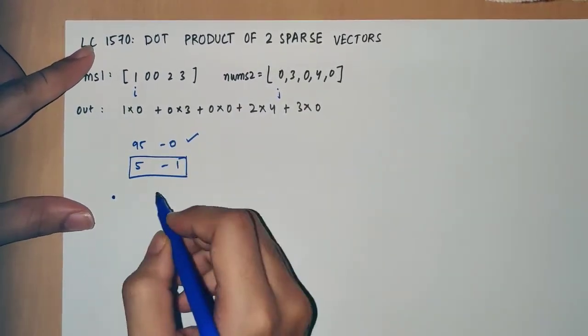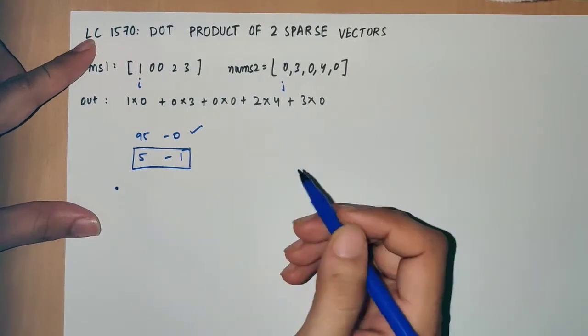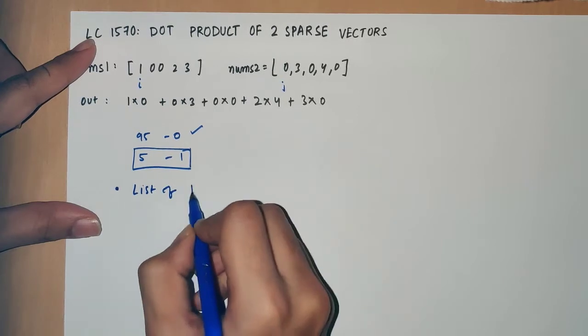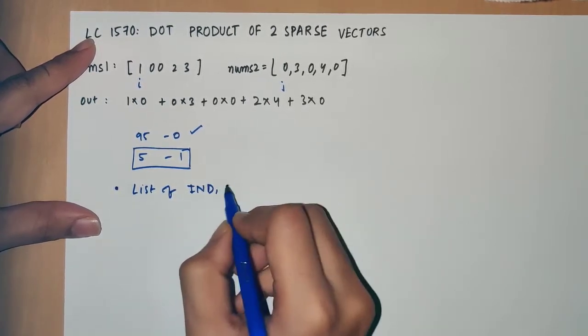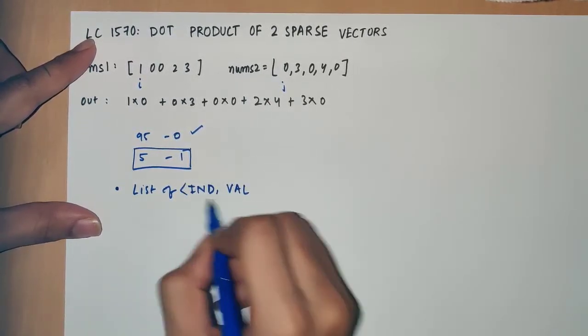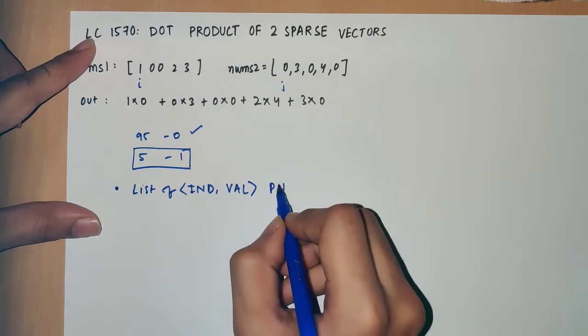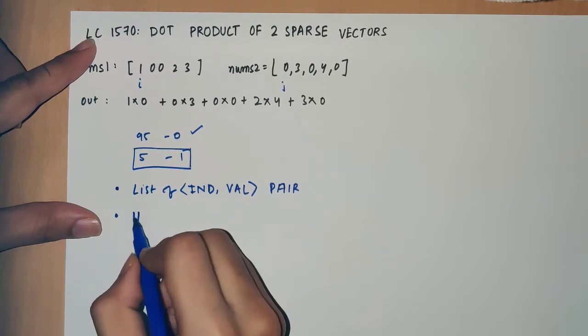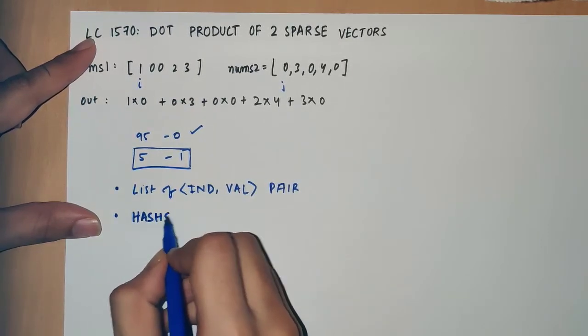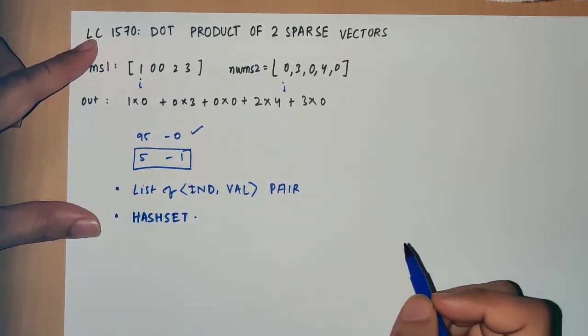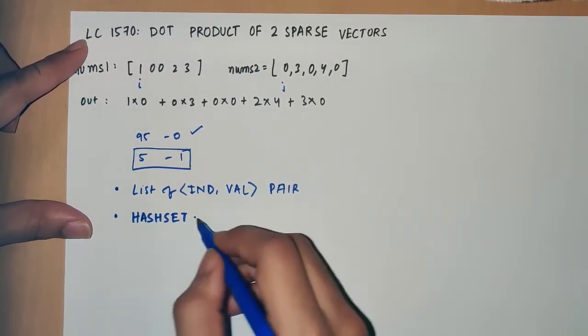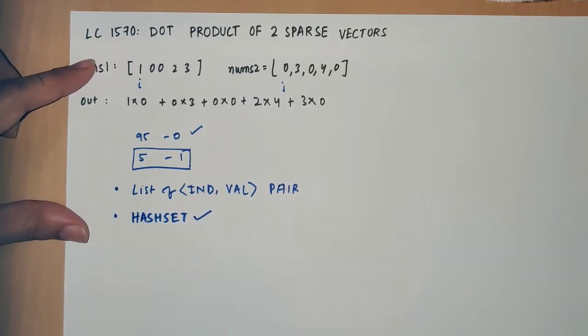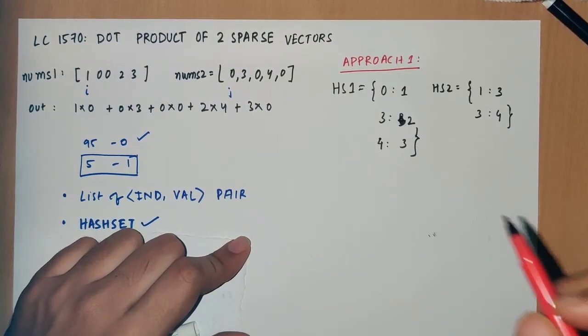For that, we can choose from two options: a list of index and value pairs, and another one is a hashset. In this video, let us throw some light on this hashset approach.